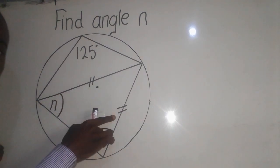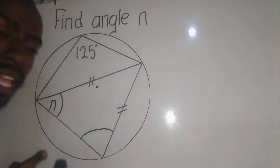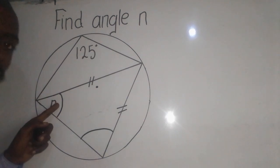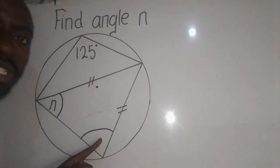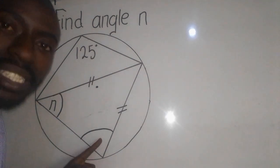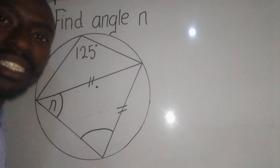Now is there a way we can find this angle n? Yes, there is a way we can find this angle, because of that theorem which states that the opposite angles of the quadrilateral are supplementary.